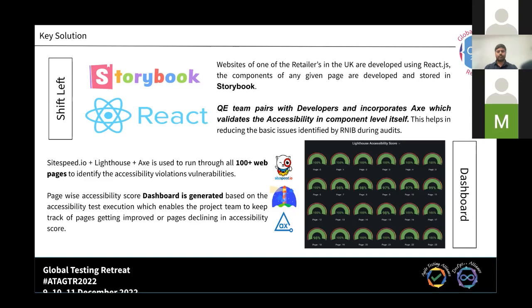That's why we started from storybook itself — it's our shift-left model, validating things earlier in development. We incorporated the axe tool, which validates accessibility of your components. We paired with developers and injected axe to validate all those components against different rules — such as WCAG 2.1, 2.2, WCAG AA, and WCAG AAA standards. We injected all those rules into axe and embedded that testing into storybook.